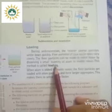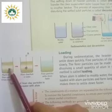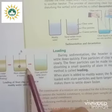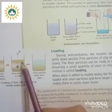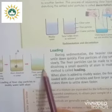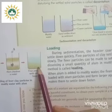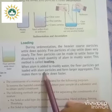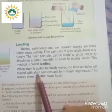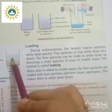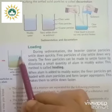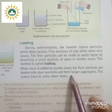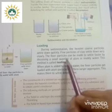In muddy water with finer particles floating, alum is dissolved and introduced into the water. The finer particles then gradually settle down along with the coarse particles. When alum is added, the alum particles stick to the finer particles and form larger aggregates. These larger, heavier aggregates settle down to the bottom faster. This is why alum is added and how the loading method works.